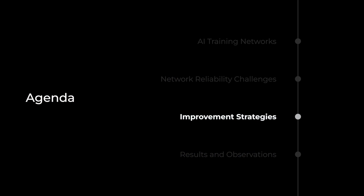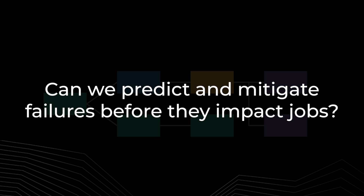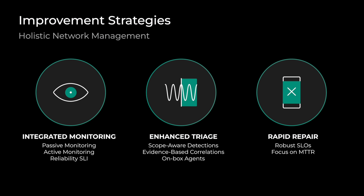Thank you, Jose. With these challenges in mind, let's talk about how we've evolved our network tooling and processes to support large-scale AI training across Meta's front-end and backend networks. Our starting point was asking ourselves: can we predict and mitigate failures before they impact jobs? To evolve our network monitoring and repair, we implemented a three-stage strategy designed to enhance efficiency and reliability. The first theme involved implementing a monitor strategy that combines both passive and active techniques. By integrating these methods with contextual data, we enhance visibility and identify service level impacts more effectively, allowing us to detect and address issues proactively.